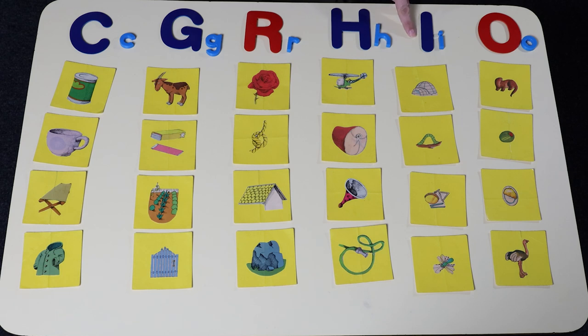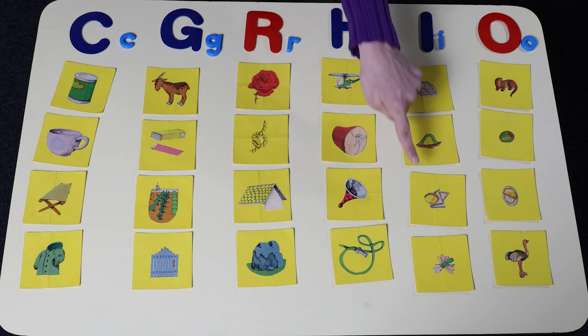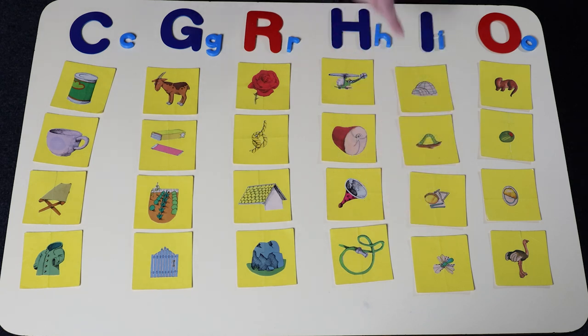The name of this letter is I. The sound it makes is I, I. Igloo, I, inchworm, I, instrument, I, insect.